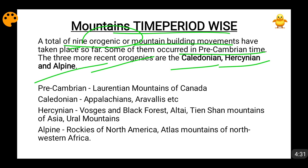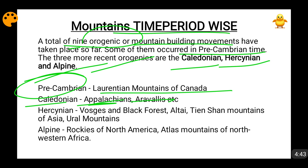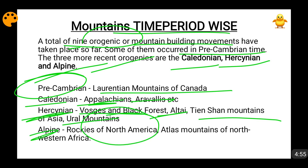In pre-Cambrian, the Laurentian mountains of Canada formed. In the Caledonian orogeny: the Appalachians of eastern USA and the Aravalli range in Rajasthan and north India. In the Hercynian orogeny: the Black Forest of Germany, Altai of Mongolia, Tien Shan of China, and Ural mountains of Russia. Then in the Alpine time period: the Rockies of North America, and the Atlas mountains of north-western Africa, which touch both the Atlantic Ocean and the Mediterranean Sea.